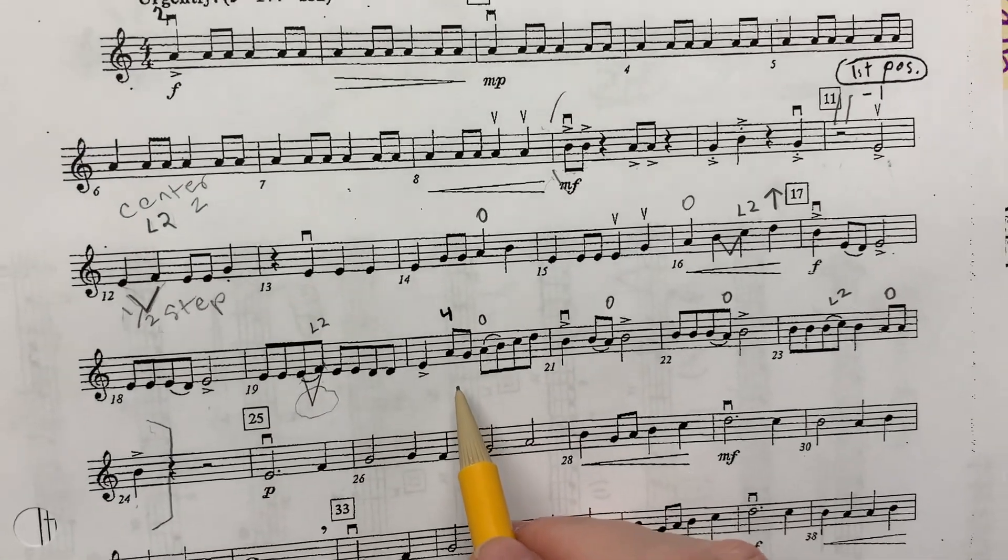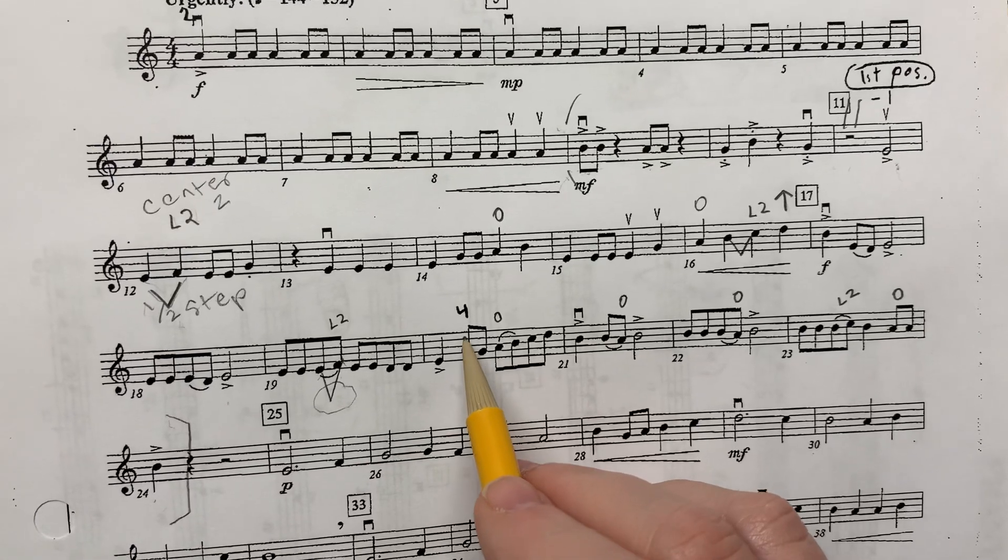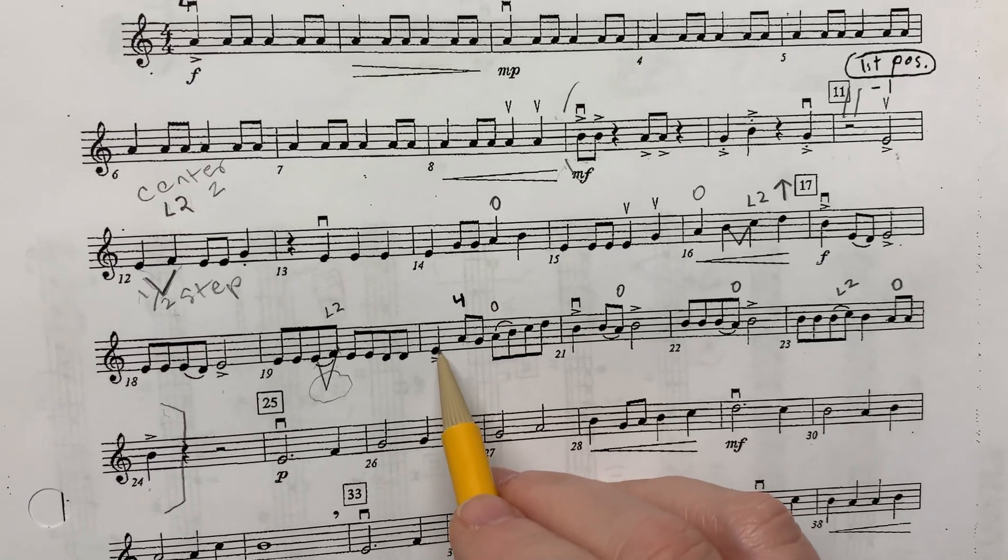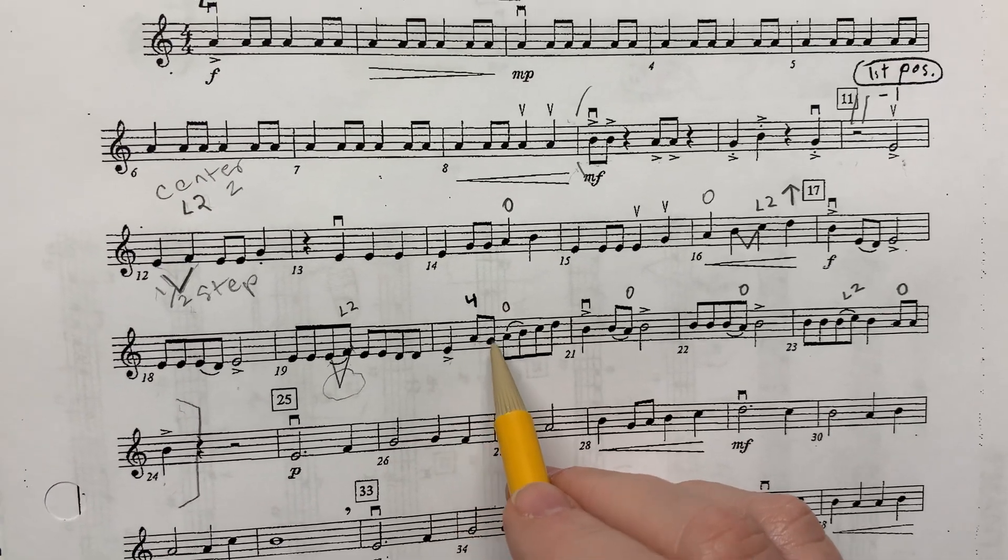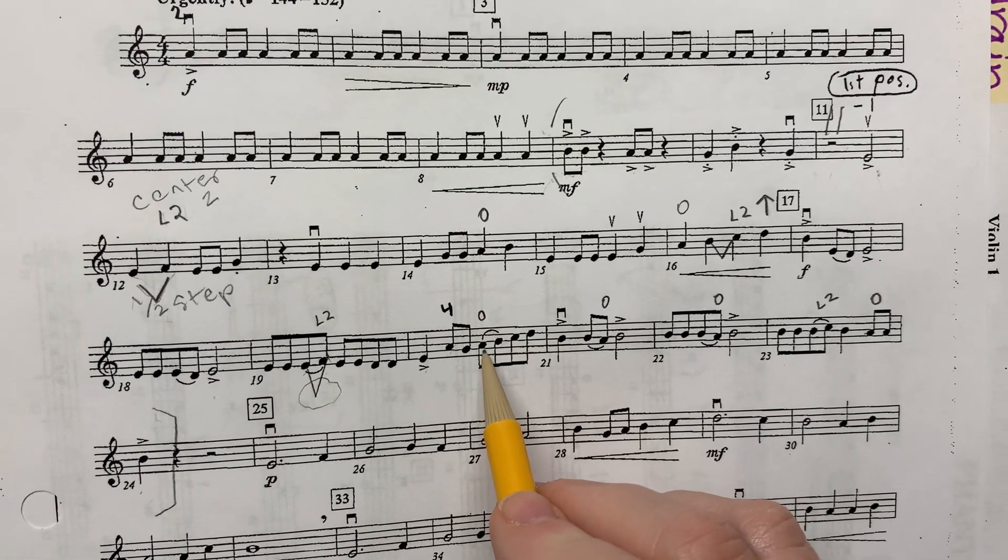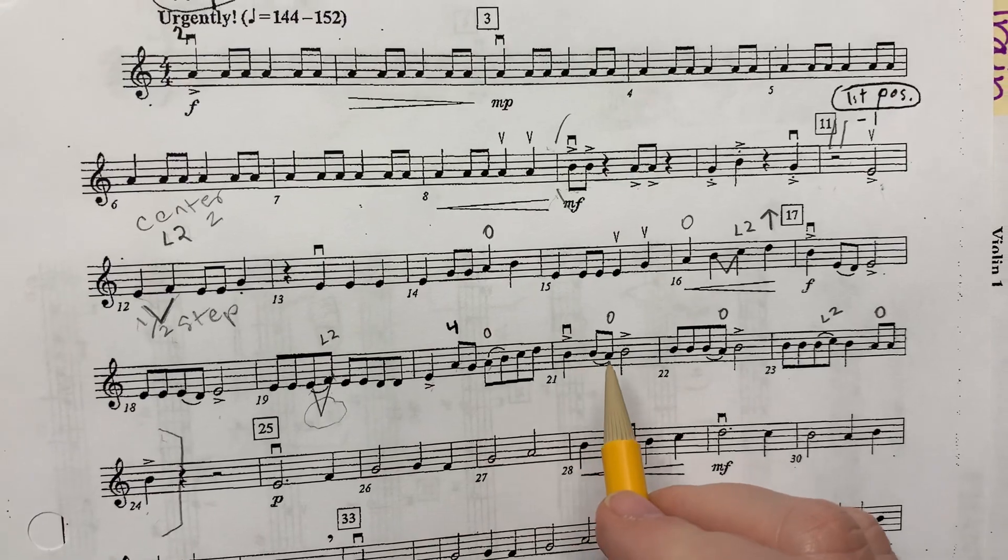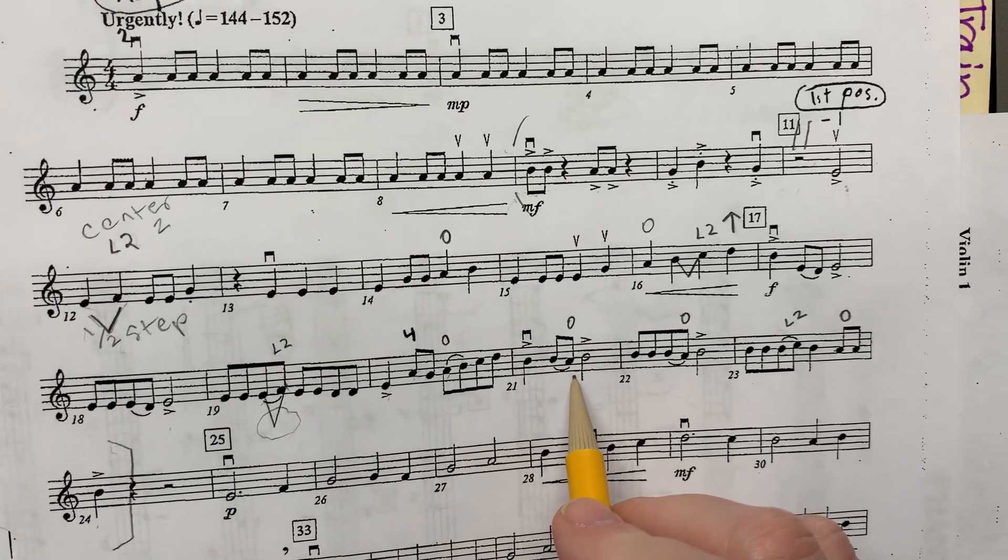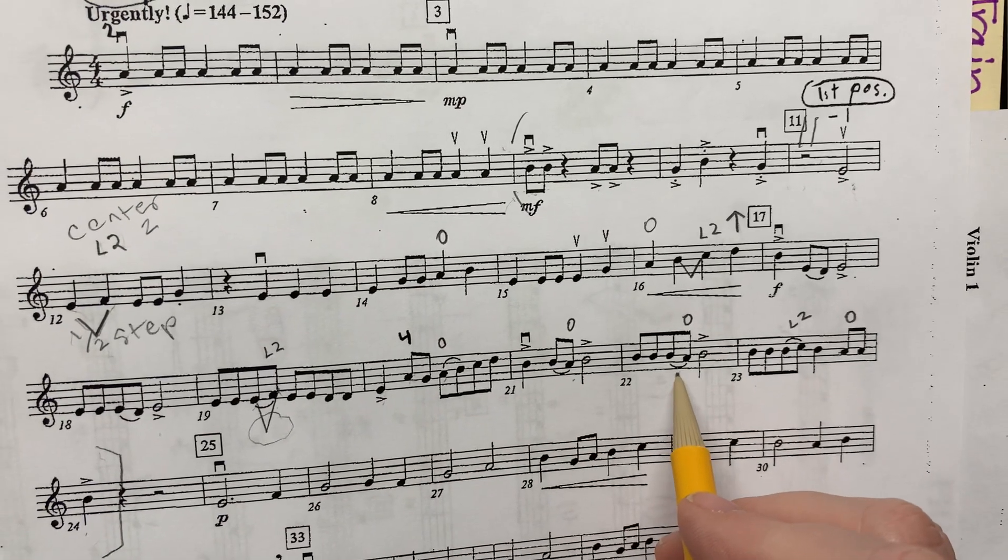In measure 20, the first A will be played fourth finger since we're already on the D string. And then we're going to switch to open A, the second half of the bar. In 21, stay on open A. 22, it's still in open A.